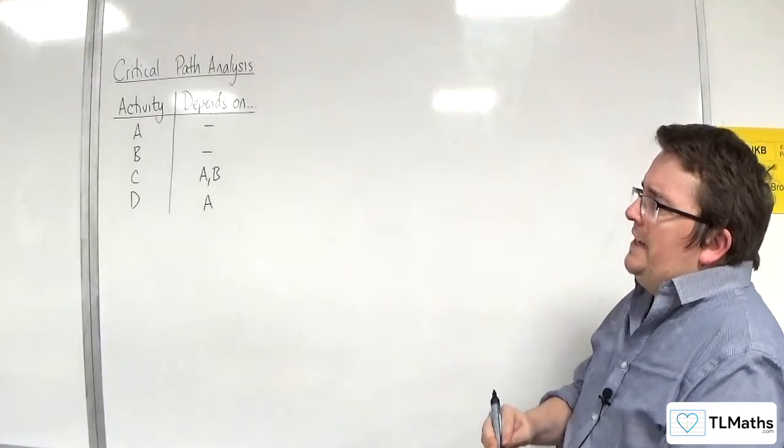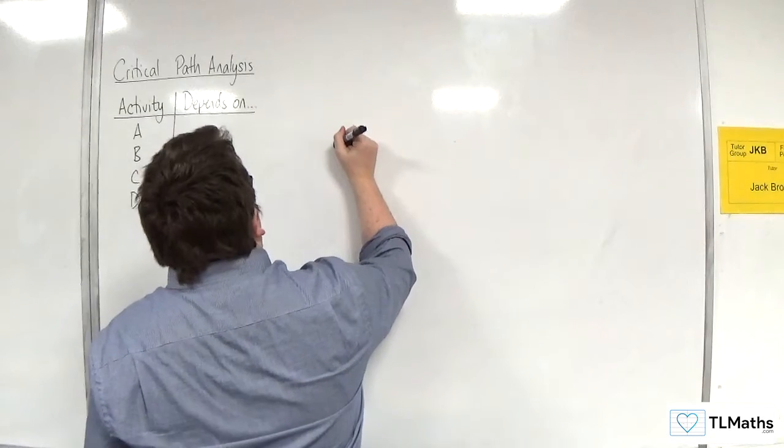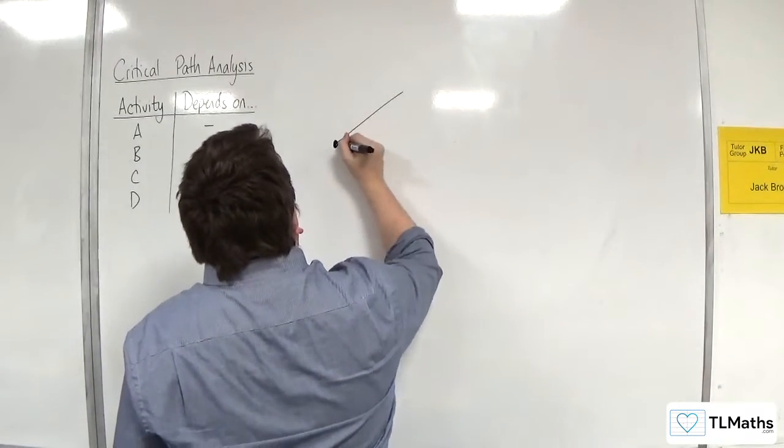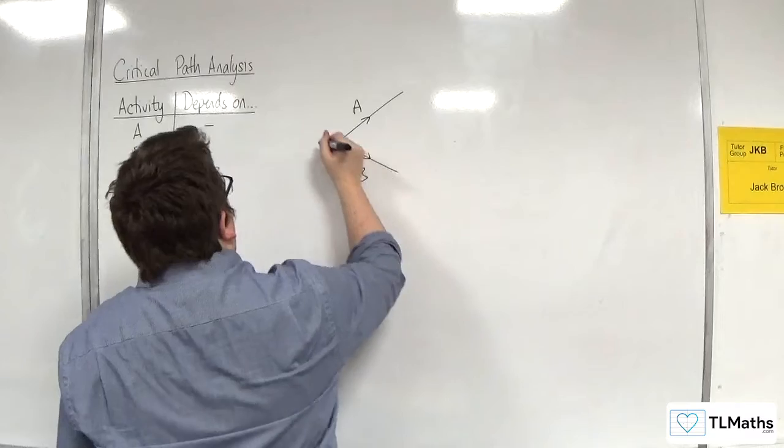So we've got activities A and B, they don't depend on anything. So at our start node, activities A and B, we can label that zero.